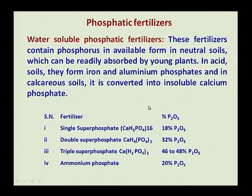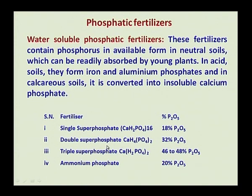Under phosphatic fertilizers, we categorize water-soluble phosphatic fertilizers, which are available in neutral soil and readily absorbed by young plants. In acid soil, they form iron and aluminum phosphate and are not available; in calcareous soils, they are converted into insoluble calcium phosphate and not available. Water-soluble phosphate fertilizers are: single superphosphate (18 percent P2O5), double superphosphate (32 percent P2O5), triple superphosphate (46 to 48 percent P2O5), and ammonium phosphate (20 percent P2O5).